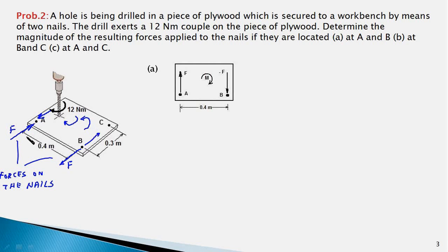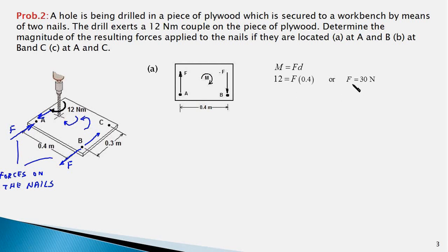The moment of the couple comprising the two nail forces is 12 newton-meters. The distance between the two forces is 0.4 meters, so the force equals M divided by d, which is 12 divided by 0.4, equal to 30 newtons. That's the answer.